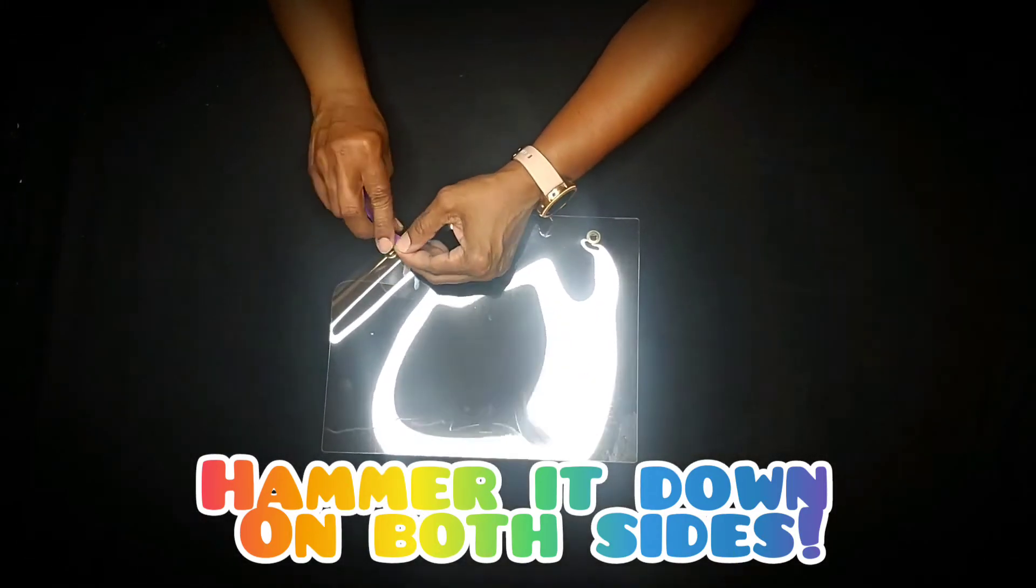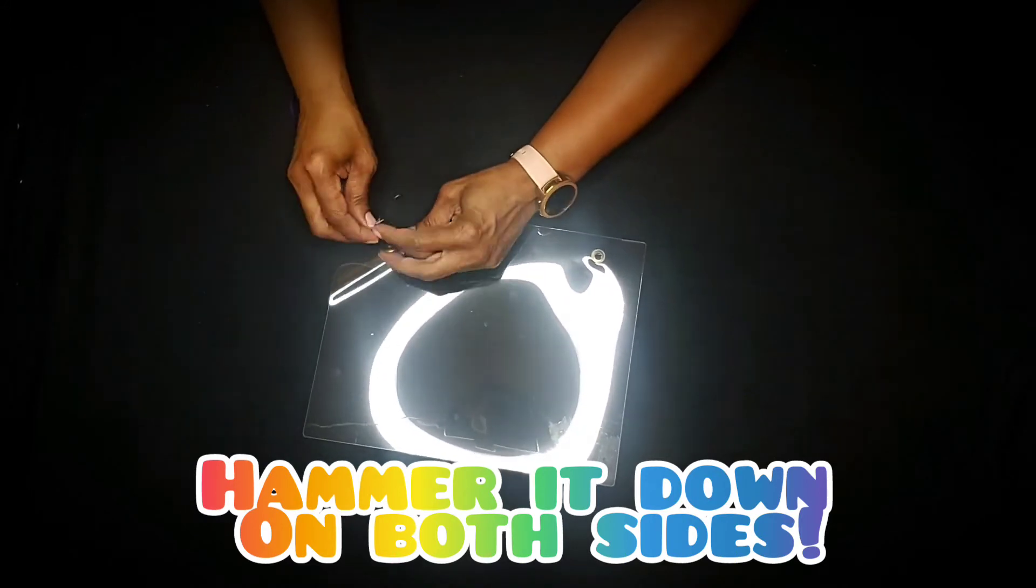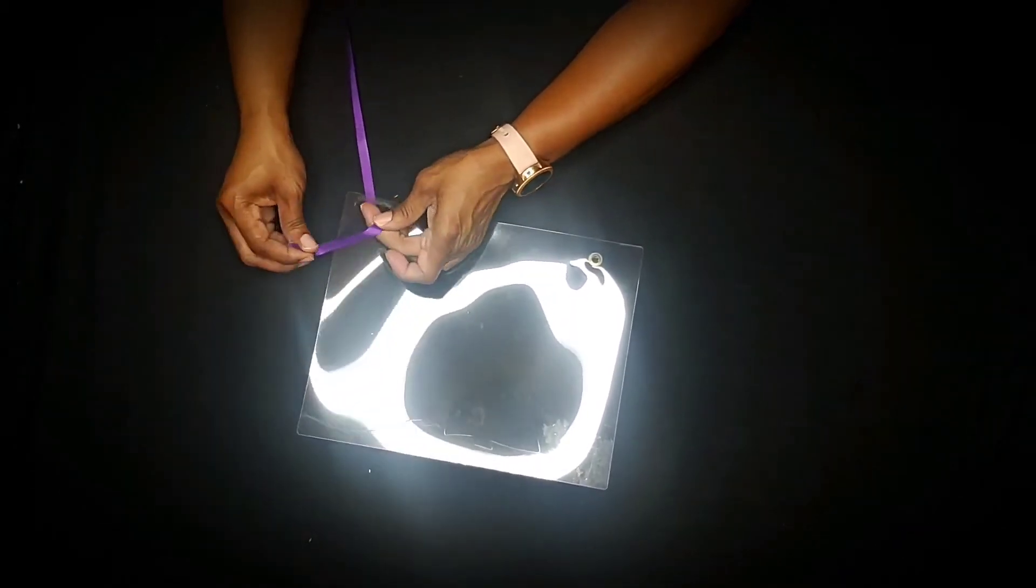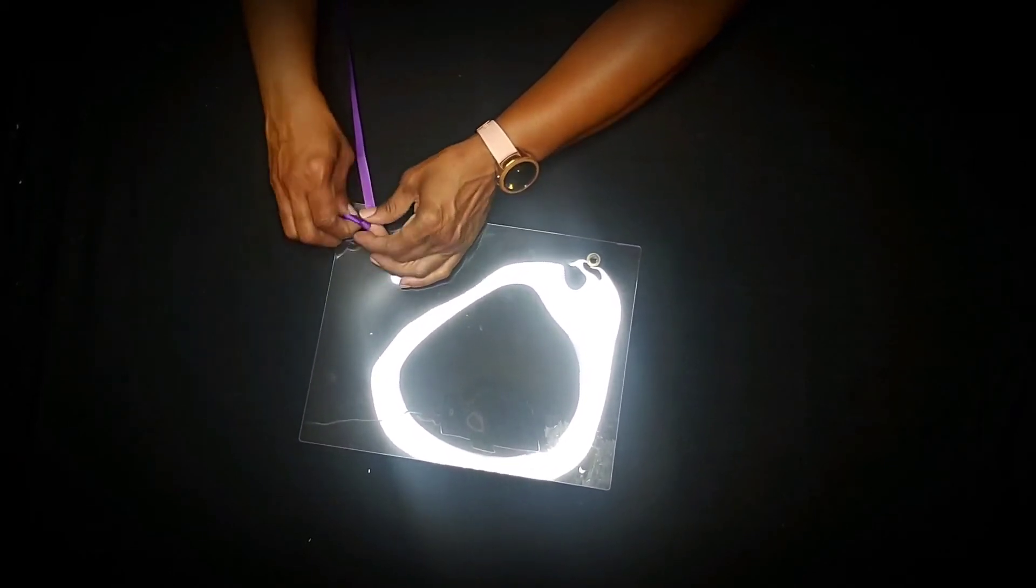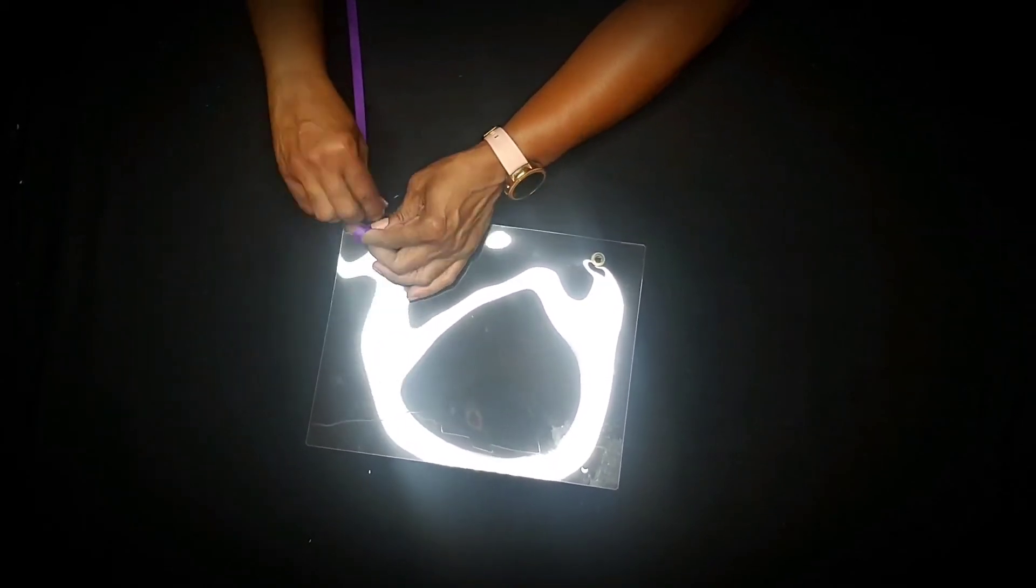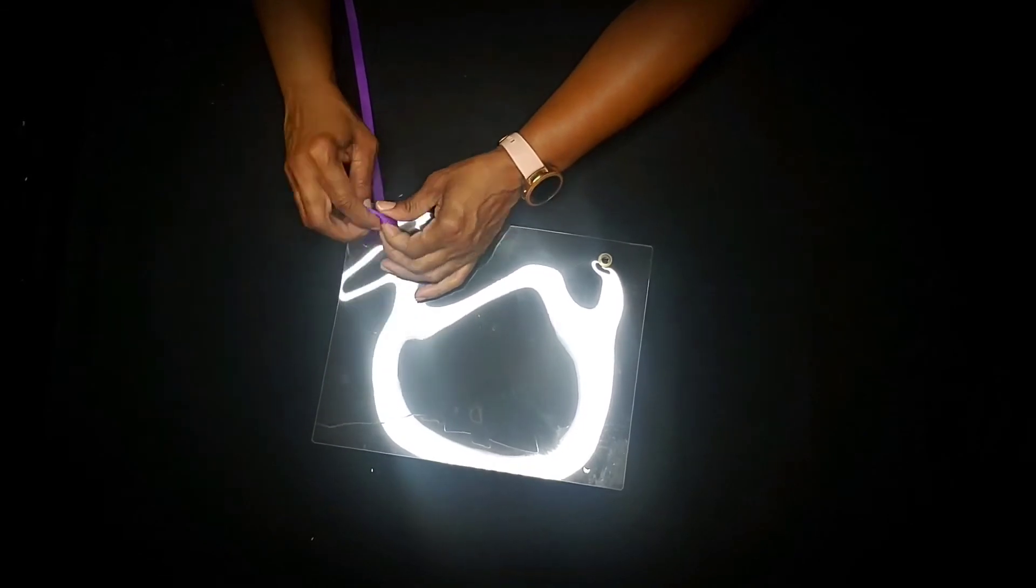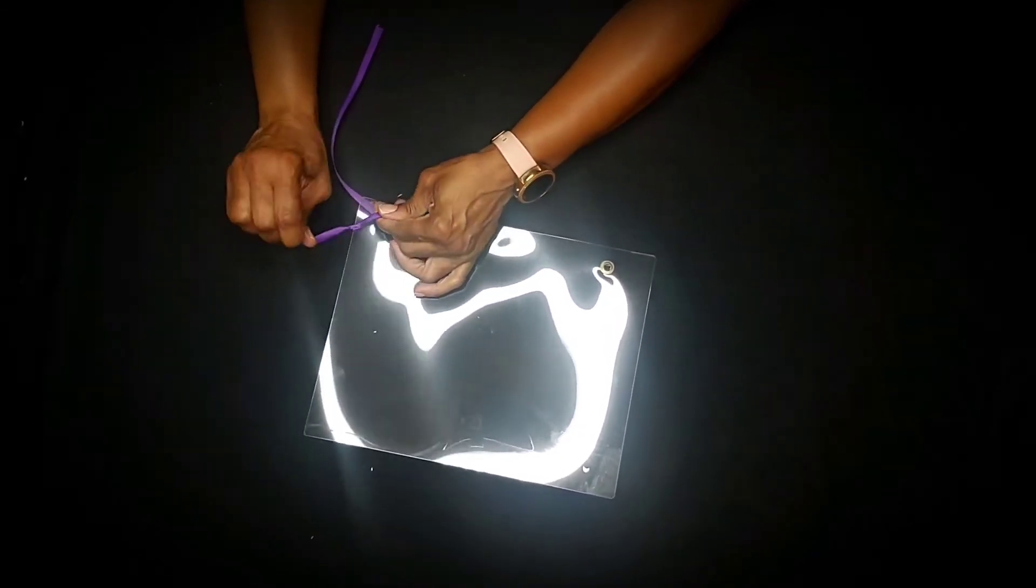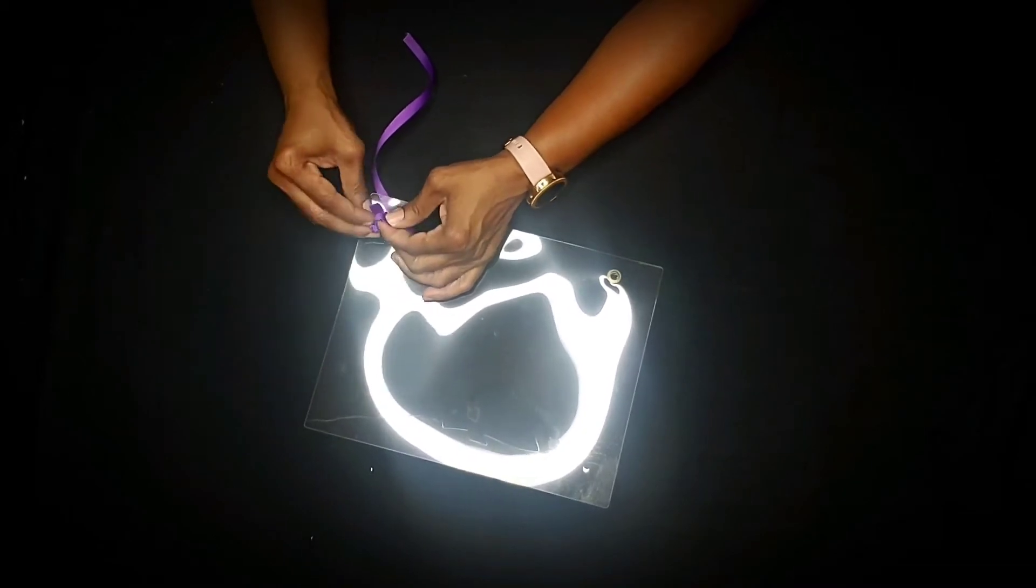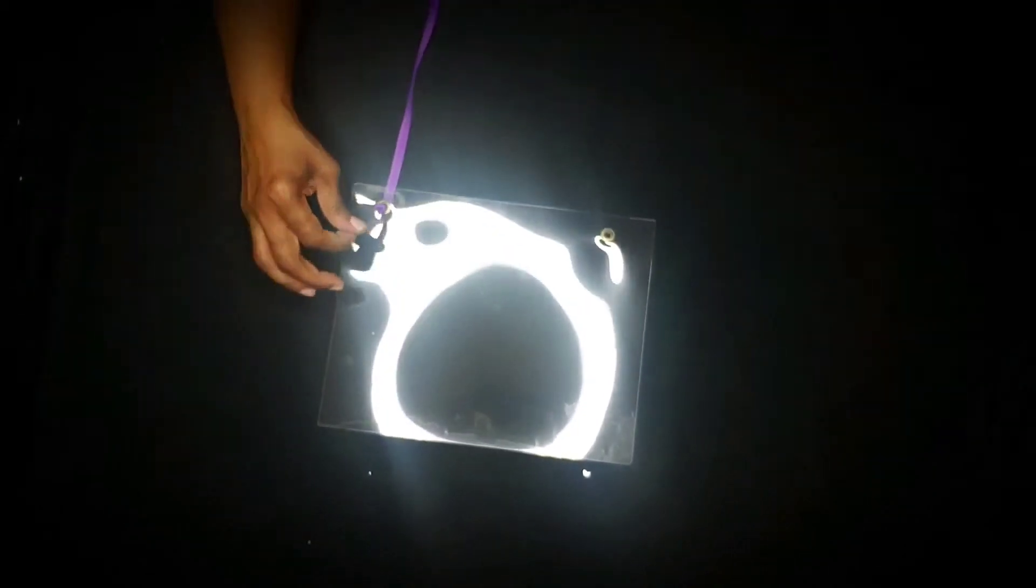You're going to take your ribbon, put it in through the closure, and then that's why we have a lighter because we're going to burn that. Tie it. We're going to double knot it about three to four times. Make sure the knot is thick. Once you thread it in, you see it can't go through.